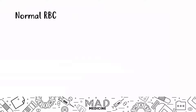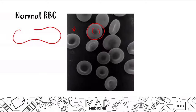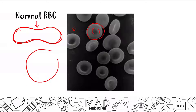The first red blood cell we're going to talk about is a normal red blood cell. Notice that you have a uniform circular shape with an area of central pallor. If you look at a red blood cell from the side view, this middle portion is what's giving you the central pallor because of this divot or indenting inward. When you look at it from the top point of view, you'll see that area of central pallor again.